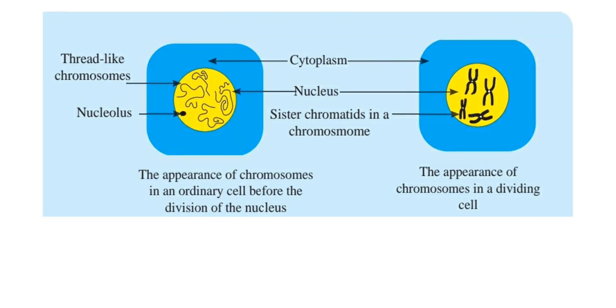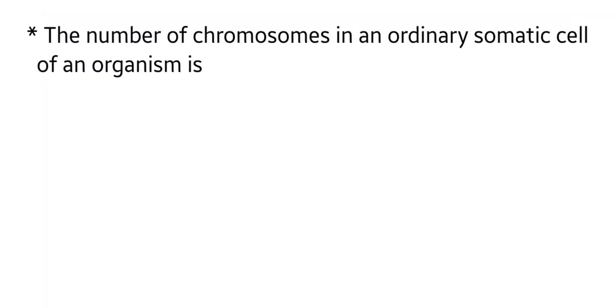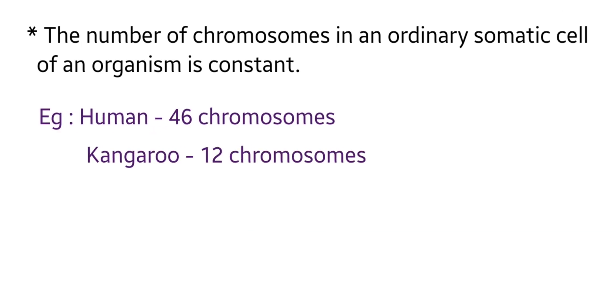Chromosomes contain and transfer the genetic material and the inherited characters from generation to generation. Look at the structures of the chromosomes in these pictures. The number of chromosomes in an ordinary somatic cell of a species is constant.